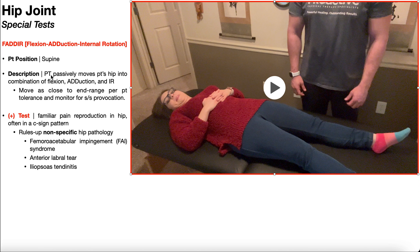The PT is going to passively move the patient's hip into a combination of flexion, adduction, and internal rotation — thus the name of the test. Make sure that you're moving as close to end range for each of those movements per patient tolerance, and monitor for symptom provocation.